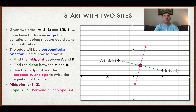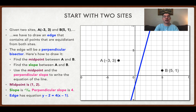I'm going to take that fraction, flip it upside down — find the reciprocal of it — and I'm also going to change the sign of it. So if the slope between the two sites is negative one over four, then the perpendicular slope is going to be positive four over one, and that's represented by that dotted pink line there. I'm now going to replace that with an edge, and that edge has equation y minus two equals four times (x minus one). So now I've created a Voronoi diagram with two cells. Everything in the left cell is going to be closer to site A, and everything in the right cell is going to be closer to site B.